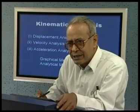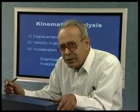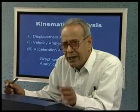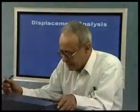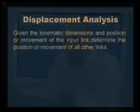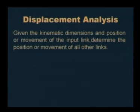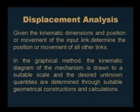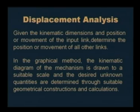In today's lecture, we discuss only the graphical method, and that too only of displacement analysis. Later on, we shall take up velocity analysis and acceleration analysis. If we are given the kinematic dimensions and the position or movement of the input link, then we should be able to determine the position or movement of all other links by this displacement analysis. In the graphical method, first we draw the kinematic diagram of the mechanism to a suitable scale, and then the desired unknown quantities are determined through suitable geometrical constructions and calculations.